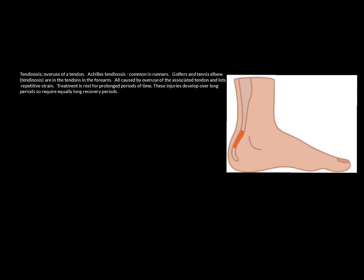Tendinosis is long-term damage to a tendon in the body. Unlike tendonitis — where 'itis' means inflammation, usually in more short-term situations — tendinosis involves so much damage to the tendon that it's a long-term condition requiring a lot of time to recover from. It's caused by repetitive strain and overuse. Achilles tendinosis causes pain in the Achilles tendon up the back of the lower leg, common in runners with poor footwear or sudden increases in training volume. Golfer's elbow and tennis elbow are also tendinosis — repetitive strain on the tendons in the forearm on either side of the elbow joint. The treatment is lots of rest, as these injuries take a long time to come on and only long periods of rest will resolve them.